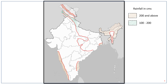The middle Ganga valley in Bihar, Jharkhand, Bengal and Orissa receive about 100 to 200 centimetres of rainfall. The leeward side of the Shillong plateau also receives about 100 to 200 centimetres. Eastern Maharashtra and the leeward side of the western ghats also receive about 100 to 200 centimetres of rainfall.